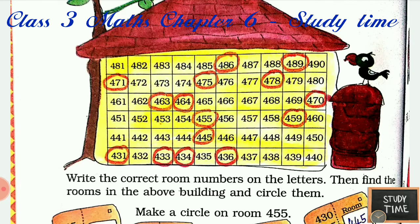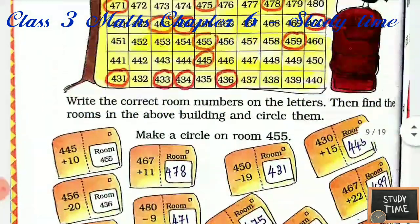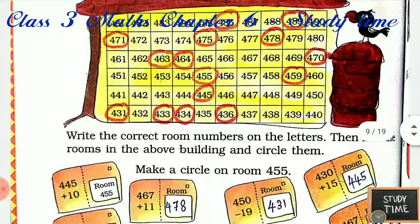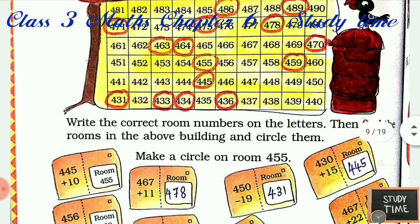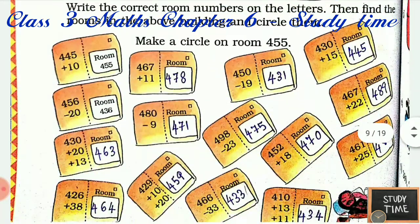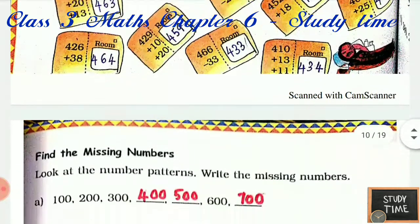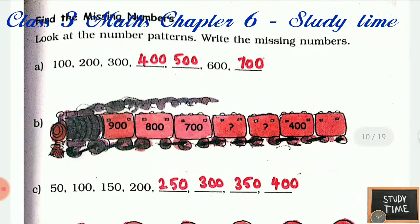The room numbers are 455, 478, 431, 445, and 489 — I have circled all of them. You can also solve and check your answers. Next, look at the number patterns and write the missing numbers. 100, 200, 300 — you add 100 each time — 400, 500, 600, 700.